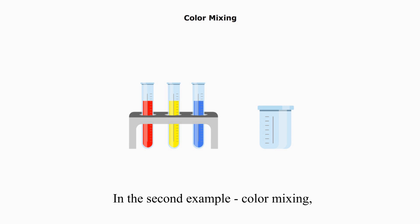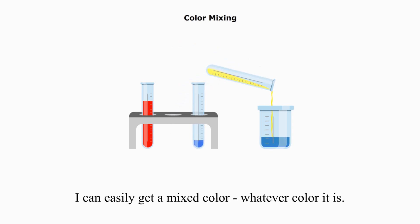In the second example, color mixing. If you give me any three different colors, like blue, yellow, and red, and let me randomly mix them, I can easily get a mixed color, whatever color it is.